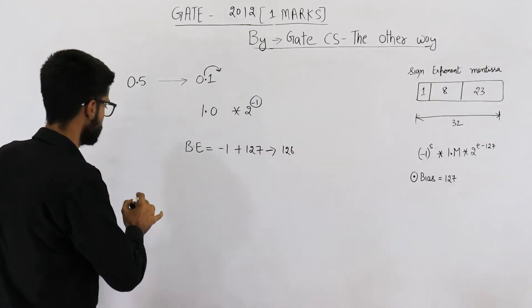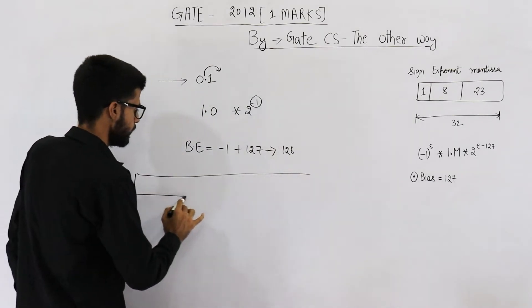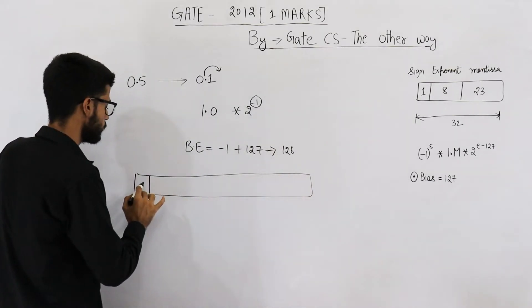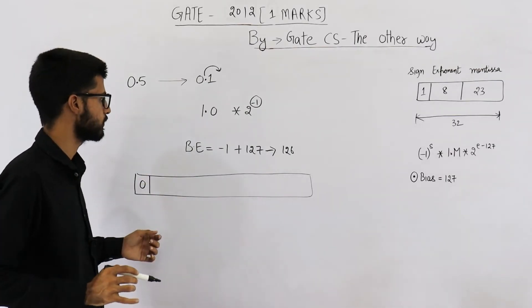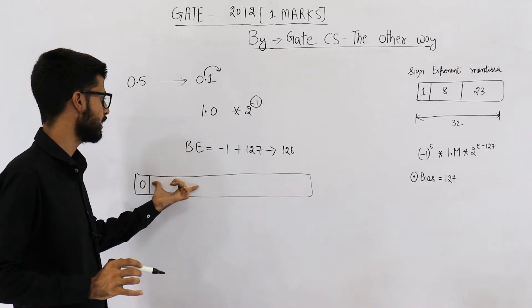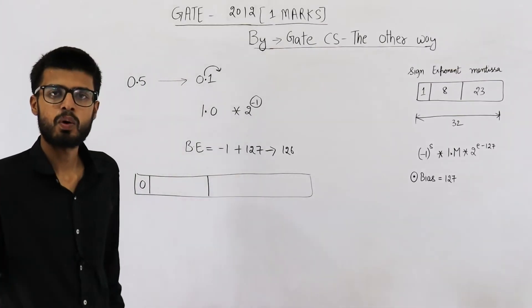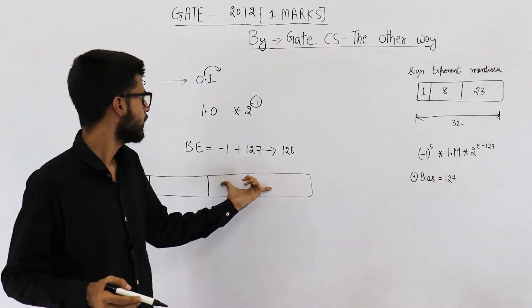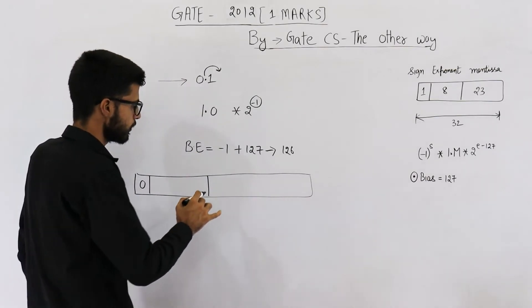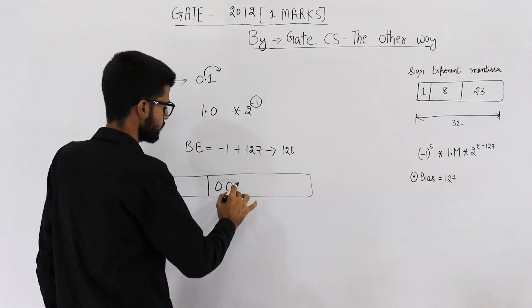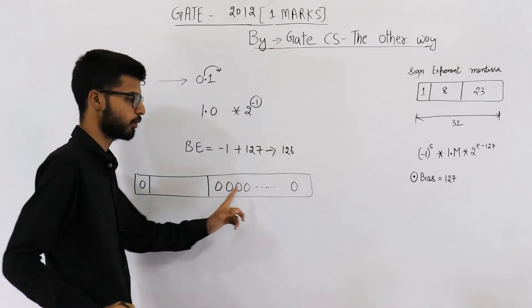That means in sign bit you are going to save 0 because this is positive. 0.5 is positive. Now we need to save 126 here. These 8 bits will be containing 126. And here we need to save 0, this mantissa, it's 0. So all of these bits they will be 0. These are 23 zeros.